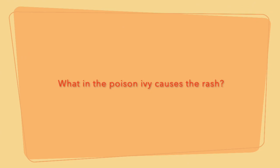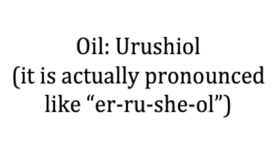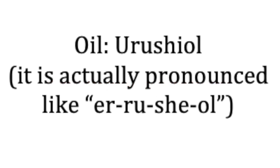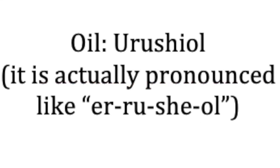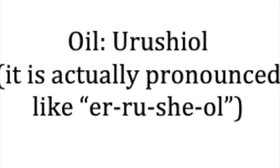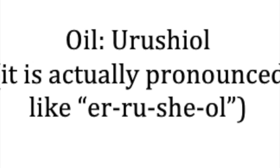Poison ivy — I'll put a picture up here — is something that you don't want to touch if you see this three-leaved plant. There is actually an oil in all parts of the poison ivy plant and it is pronounced urushiol. That is the actual substance that causes the rash in your skin when you are exposed to the poison ivy plant.